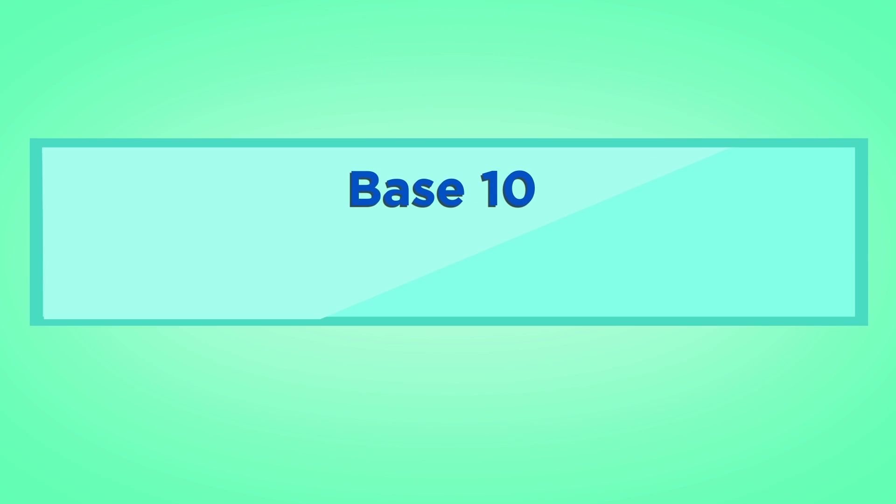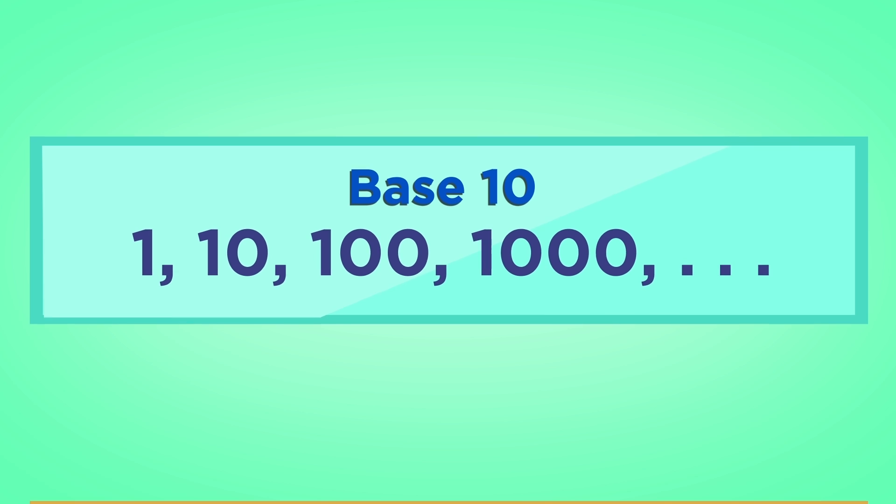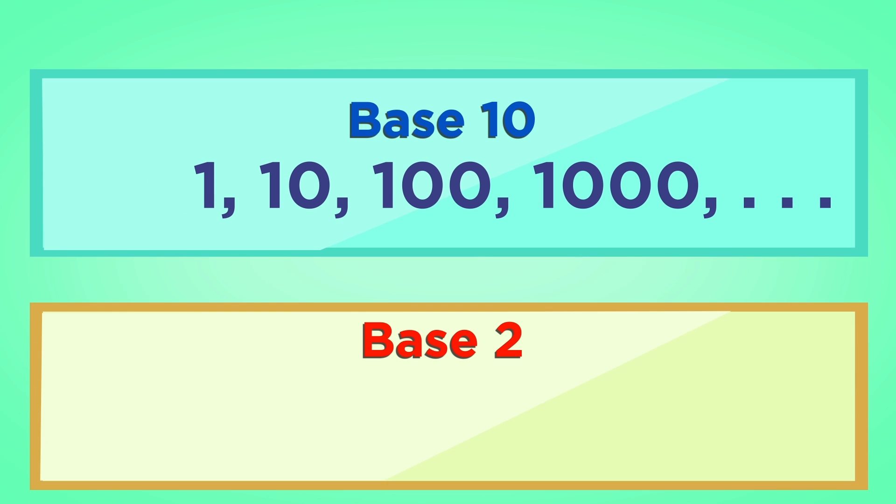Amazingly, you can figure out exactly which bottle is poisoned, but the method is tricky and involves binary numbers. Here's a crash course in binary. Normally we write numbers in base ten. This means that the digits represent increasing powers of ten. One, ten, a hundred, a thousand, and so on. But in base two, or binary, the digits represent increasing powers of two.